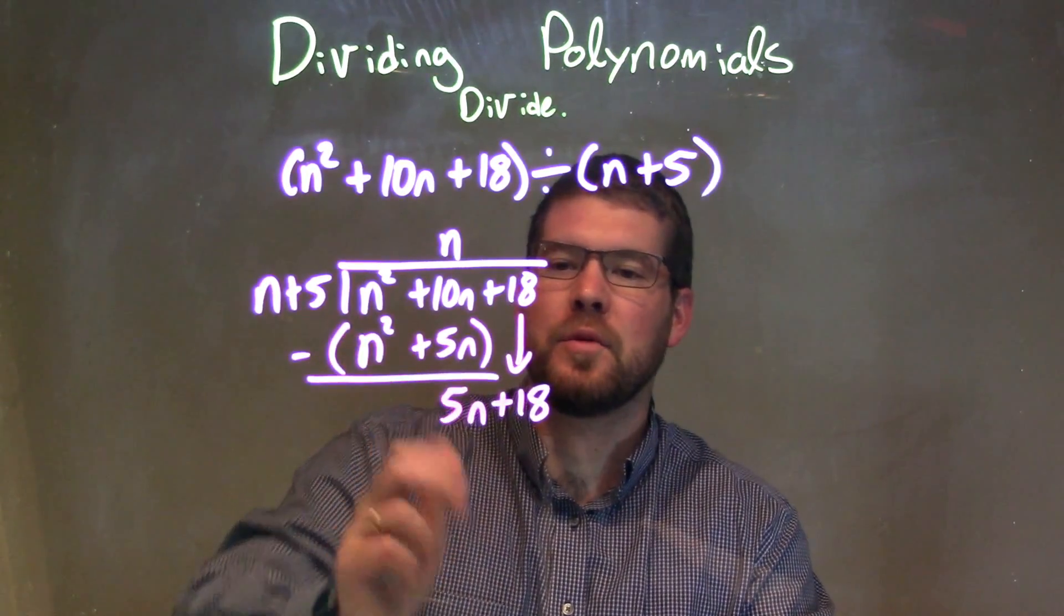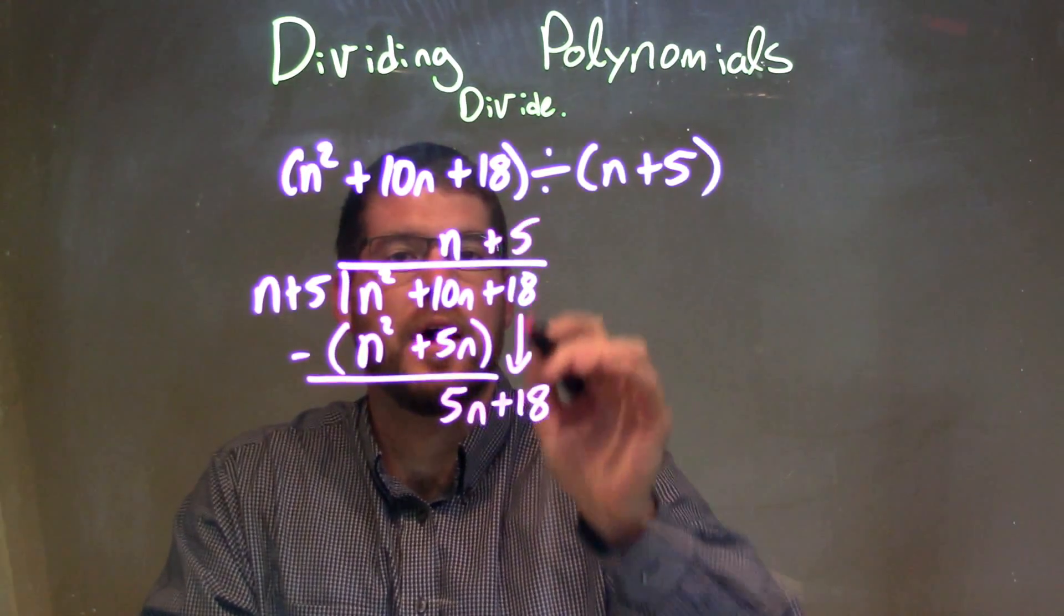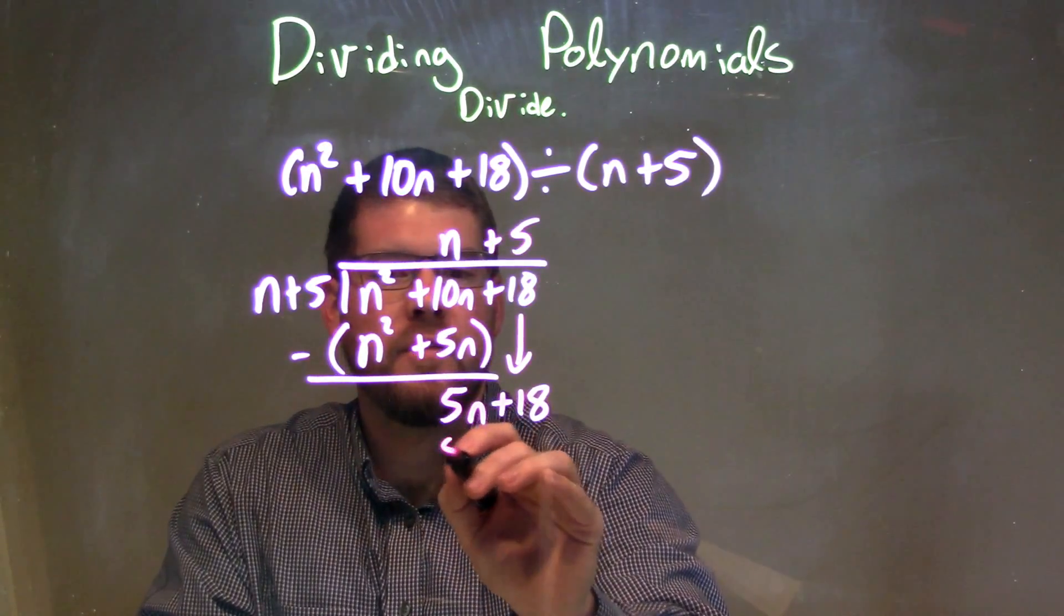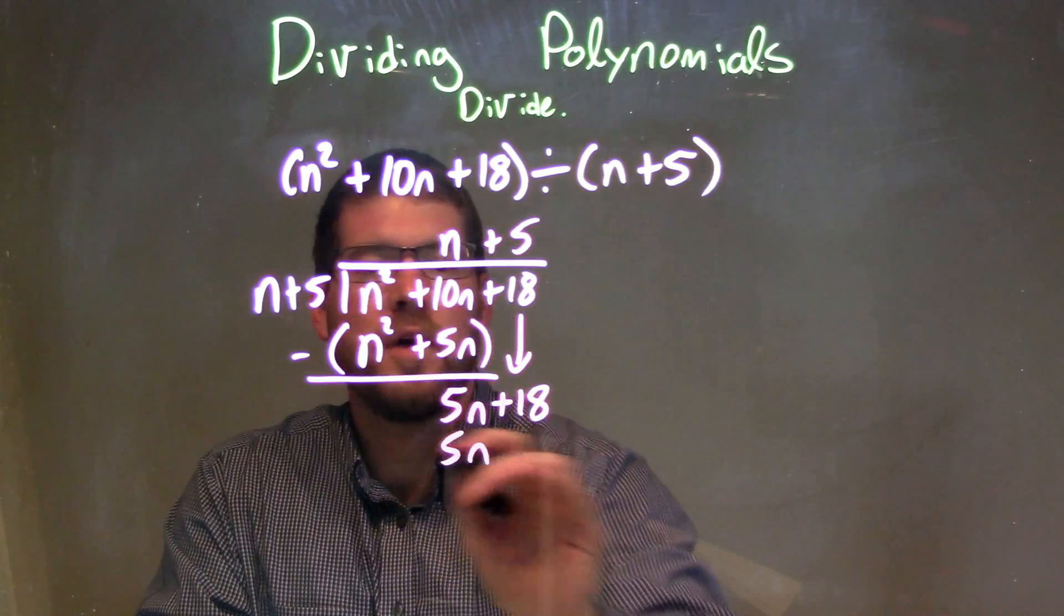What times n gives me 5n? Well, that's easy. That's just 5, right? So plus 5. 5 times n is 5n and 5 times 5 is 25.